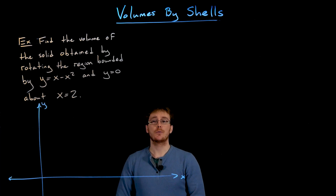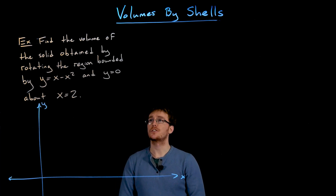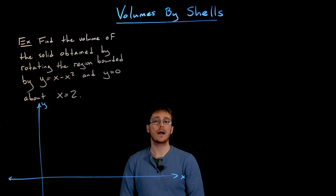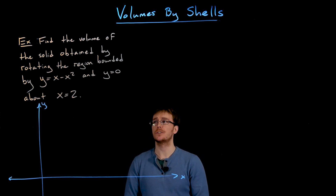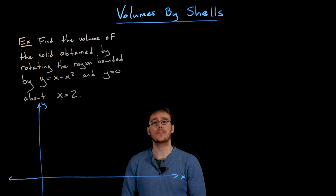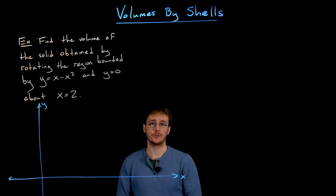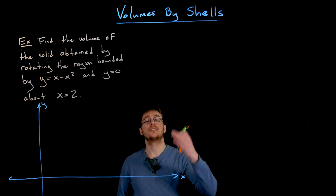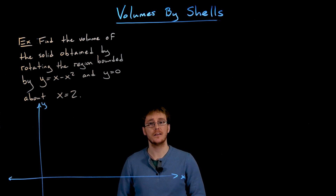Welcome back everyone. In this example we are asked to find the volume of the solid obtained by rotating the region bounded by y equals x minus x squared and y equals zero about the line x equals two. We're going to find this volume using the cylindrical shell method.